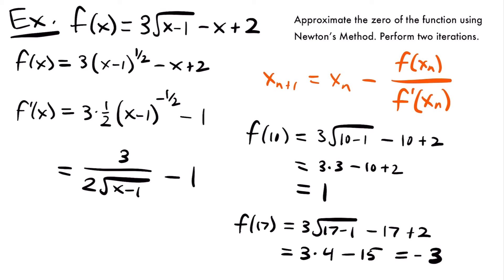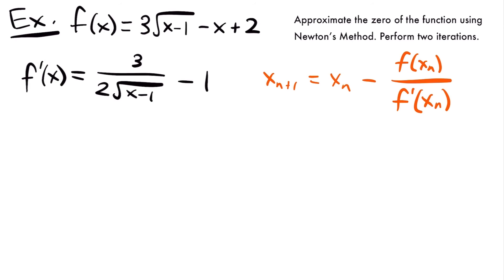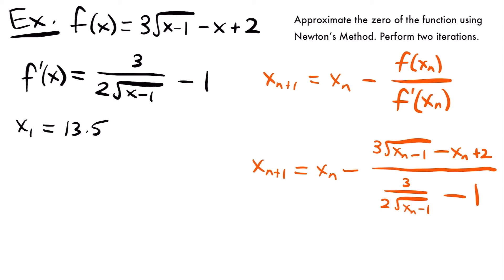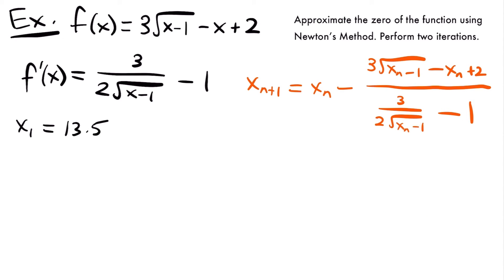I'll take the midpoint of 10 and 17 as my first guess: (10 + 17) / 2 = 13.5. So x sub 1 equals 13.5. Now let's rewrite Newton's method formula using our actual function and derivative: x sub n plus 1 equals x sub n minus [3 times the square root of (x sub n minus 1) minus x sub n plus 2] divided by [3 divided by (2 times the square root of (x sub n minus 1)) minus 1].